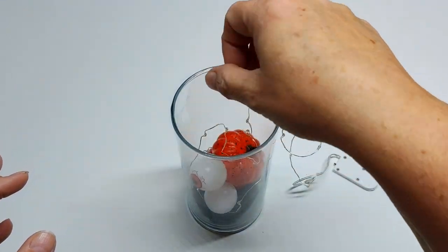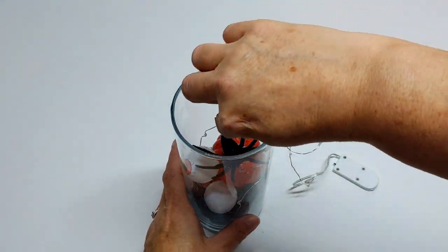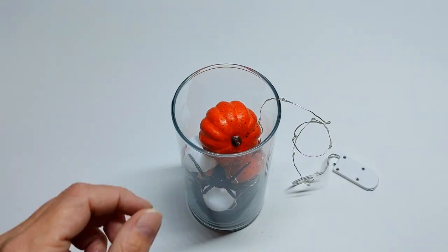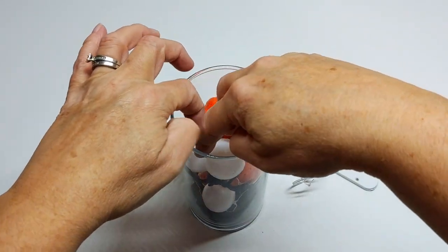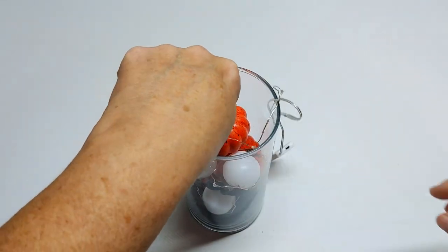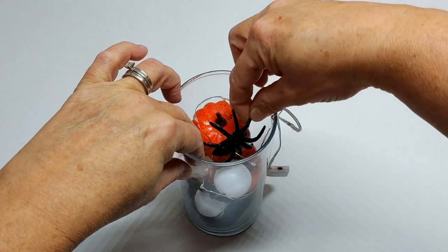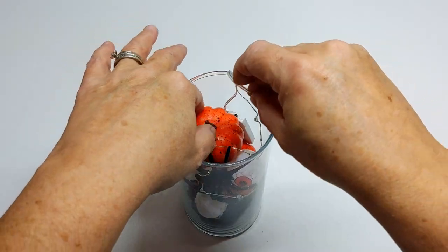Then I just repeated the process and adjusted them how I wanted them. I finished it off by stringing in the rest of the lights, adding another spider, and tucking the switch in the back.